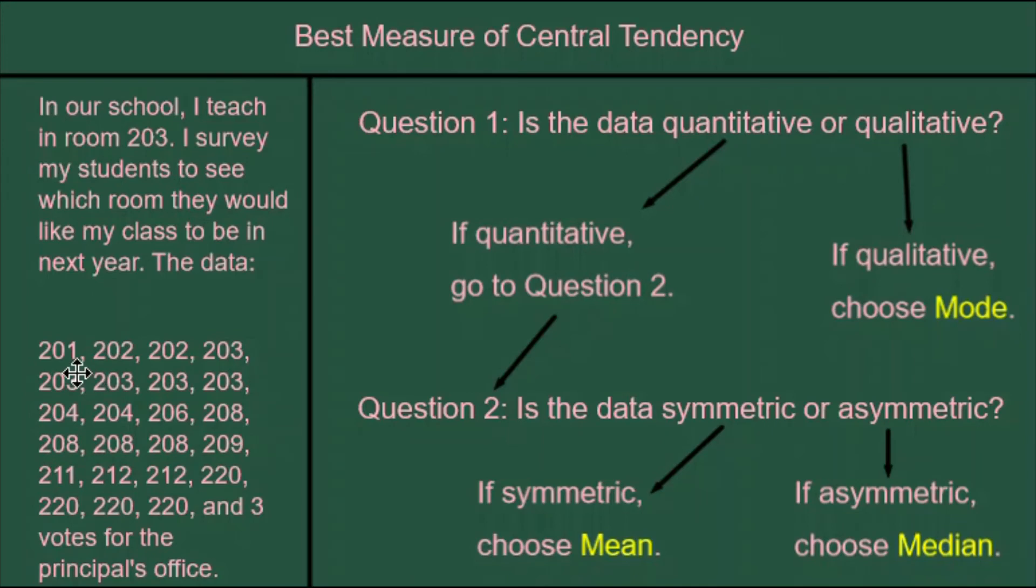The room numbers that are used for classrooms aren't really used as numbers. Finding the average of those numbers, for instance, would not mean anything. This is qualitative data. These room numbers are acting much like names.